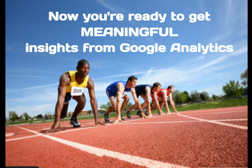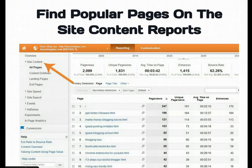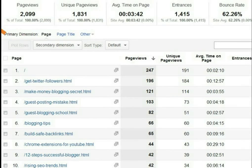Now you're ready to get some meaningful insights from Google Analytics. You're probably wondering where do people go when they visit your blog. For the answer to that, navigate over to the Site Content reports and click on All Pages. On this site content report you're going to see the most popular pages on your blog, ranked in order of popularity. I want you to go to this report first and think about the top ten pages you see here.